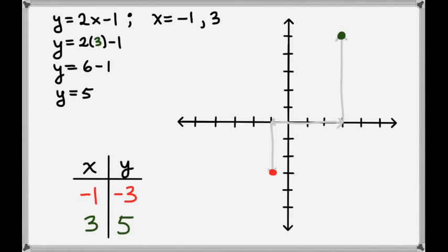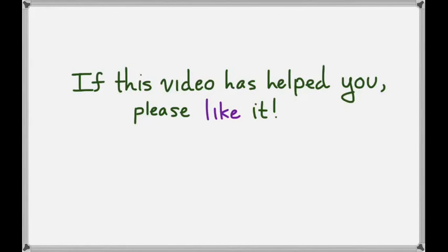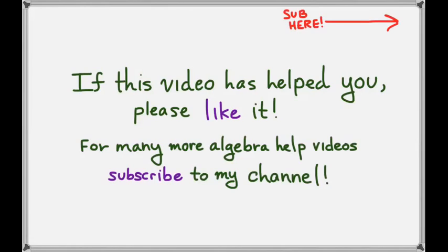Now we have two points on our line, so we can go ahead and draw the line through those two points. And that is the graph of y equals 2x minus 1. If this video has helped you, please like it — that way other people who also need help will be able to find this video in the YouTube search more easily. You can subscribe by clicking on the icon in the upper right-hand corner.